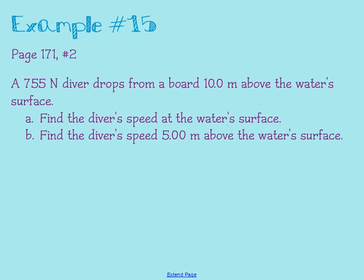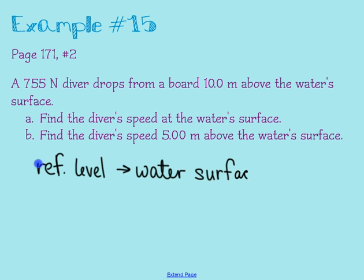We are assuming that there is no air resistance, and this diver is not in contact with anything other than the air, so there's no friction. Step two says to define a reference level. I'll indicate this by saying the reference level is the water's surface. So our object, the diver, has gravitational potential energy any time that he or she is not at that reference level — any time above or below the surface of the water.